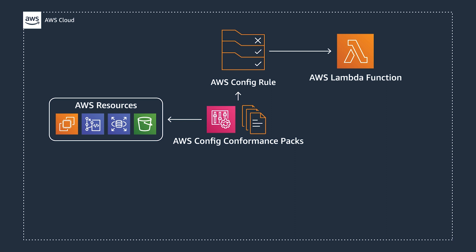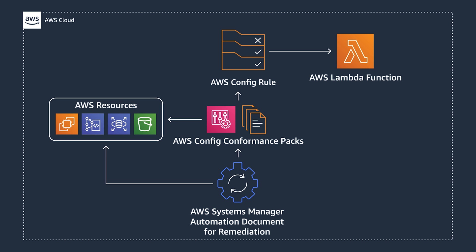In addition to your Config rules, your conformance pack would also include Systems Manager automation documents. As a result, you'd be able to trigger API calls or scripts to actually execute actions on your AWS resources. This way, you can modify your non-compliant resource types to move into a desired state. As you can see here, you now have an AWS environment that is effectively governed and optimized by using AWS Config and Conformance Pack.